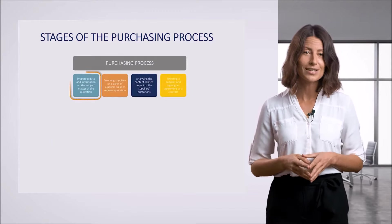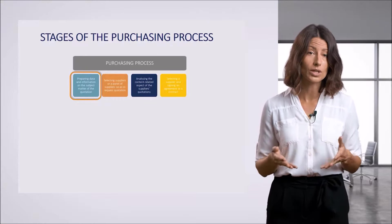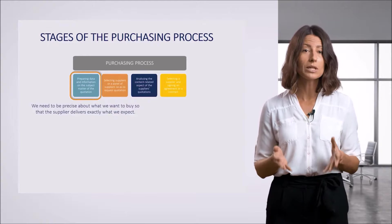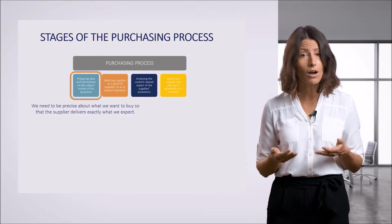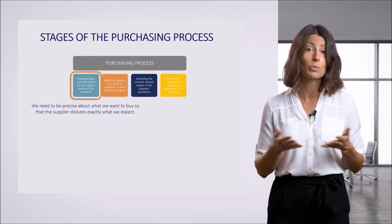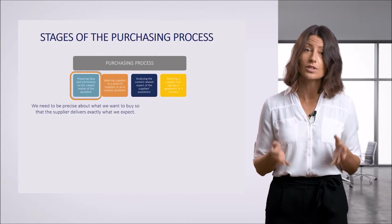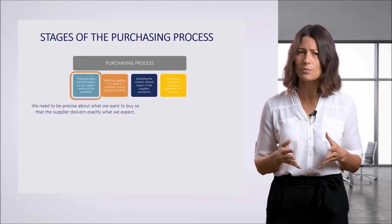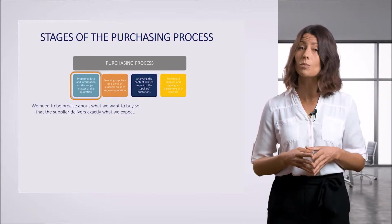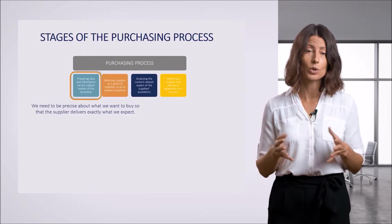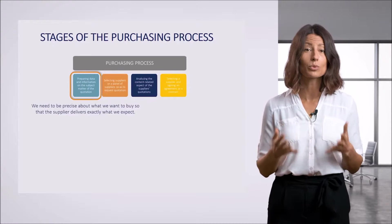The first, very important stage of the purchasing process is to prepare data accurately describing the subject matter — product or service — of this process. We need to be precise about what we want to buy so that the supplier can deliver exactly what we expect. For instance, if you enter '1,000 litres of mineral water' on your purchase order and then lodge a complaint because the water was delivered in 300ml bottles instead of 1.5L, is sparkling instead of still, and arrives in 20 plastic crates instead of shrink-wrapped packs of 6 — was that action professional? Precise preparation of data may affect receiving a complete quotation, avoiding unexpected additional costs, and precisely selecting a panel of qualified suppliers.